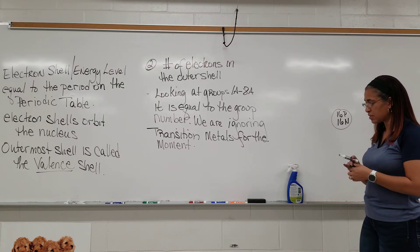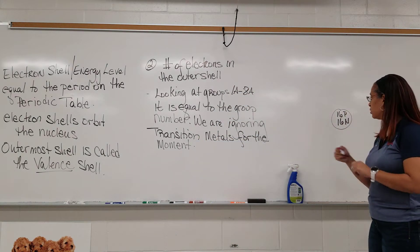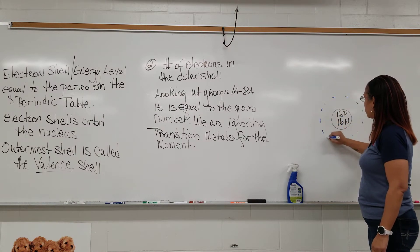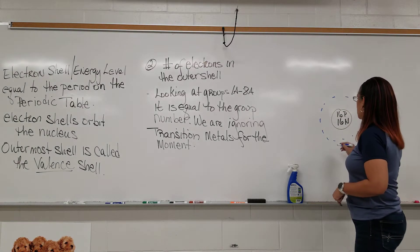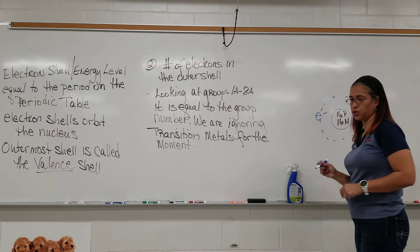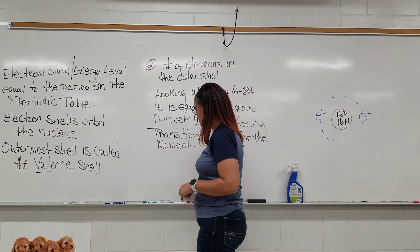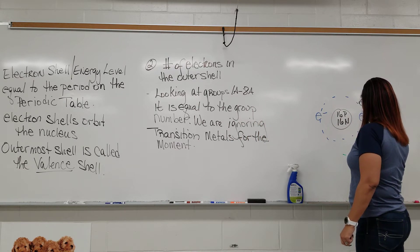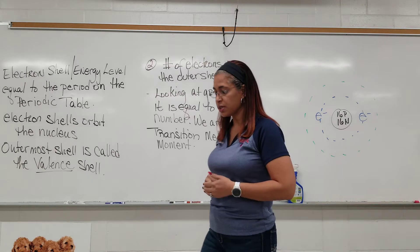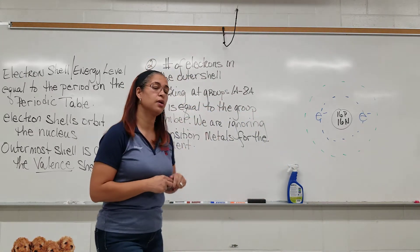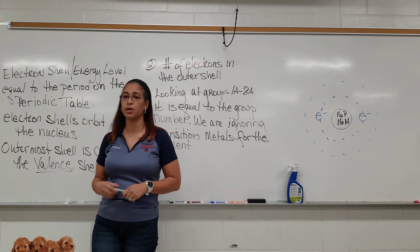Now for electrons — I like to do this in color to differentiate the shells. The first shell I'm going to make blue. The maximum number of electrons in the first shell is two, so we're going to have two electrons there. How many electron shells does sulfur have? Sulfur is in the third period, therefore it has three electron shells.